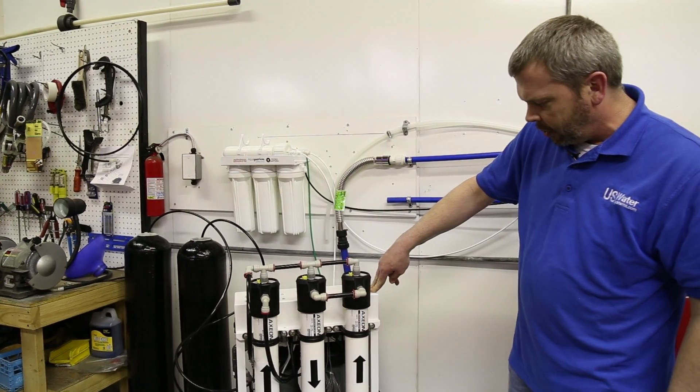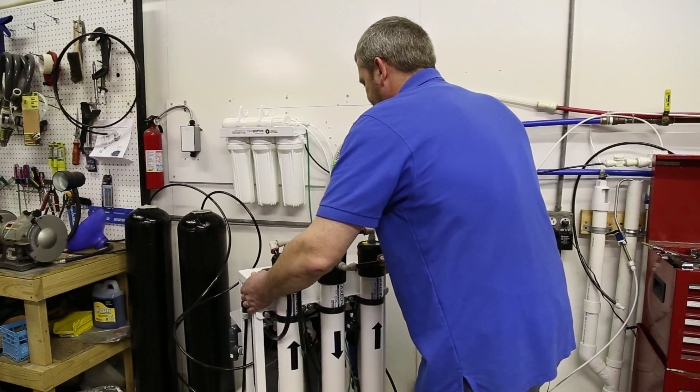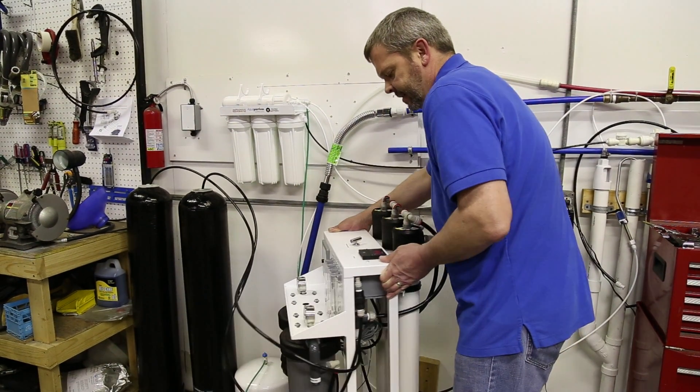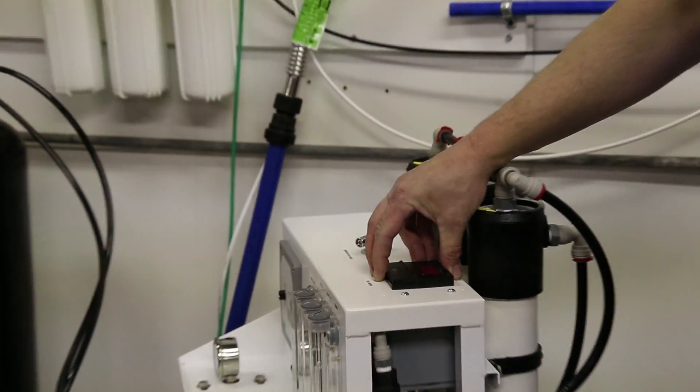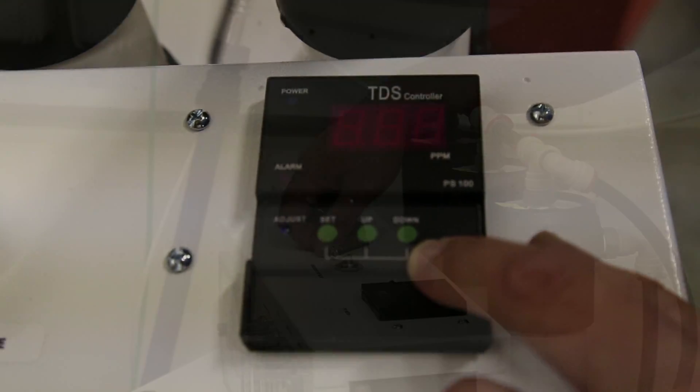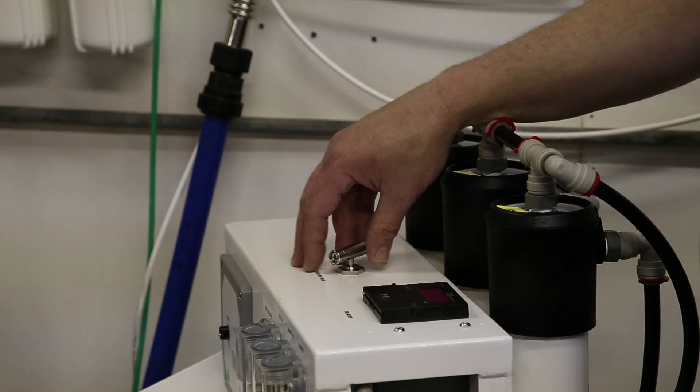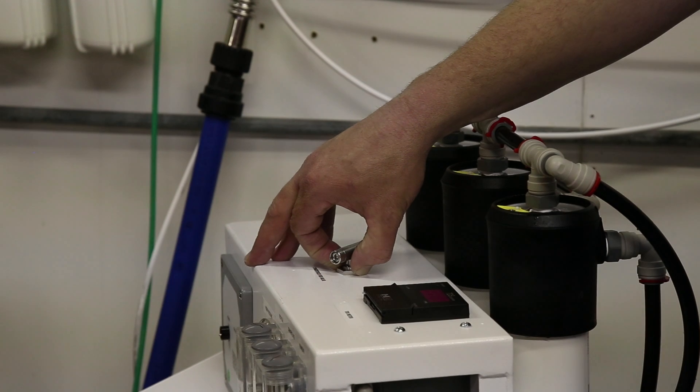The only other controls on here would be if you would happen to have a TDS meter which would be on the top. Some of these TDS meters can either have a dual function where they test the water in and the water out or just the water out. This particular one just does the water coming out of the system.